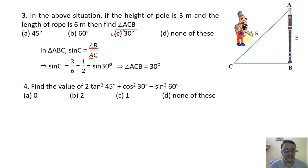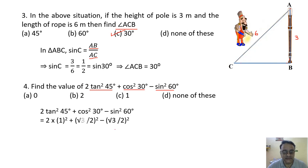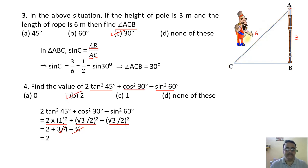Question 4: Find 2tan²45° + cos²30° − sin²60°. tan 45° = 1, cos 30° = sin 60° = √3/2. Substituting: 2(1) + 3/4 − 3/4 = 2. The correct option is option B.